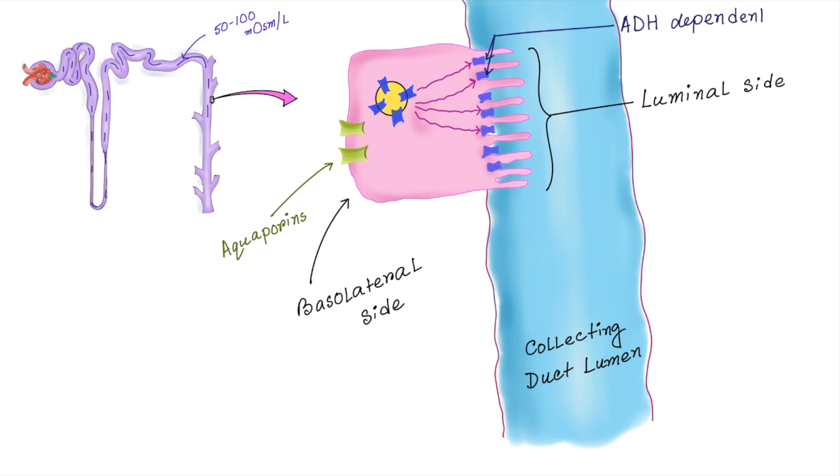So in the presence of ADH, aquaporin channels are planted on the luminal side of the nephron. So ADH makes this portion water permeable.